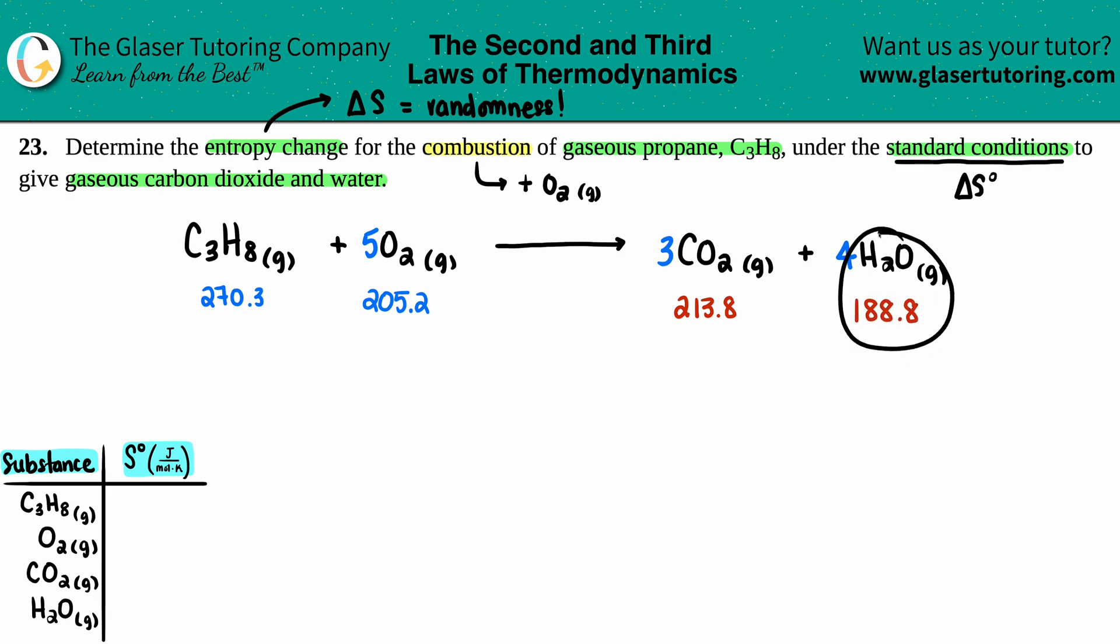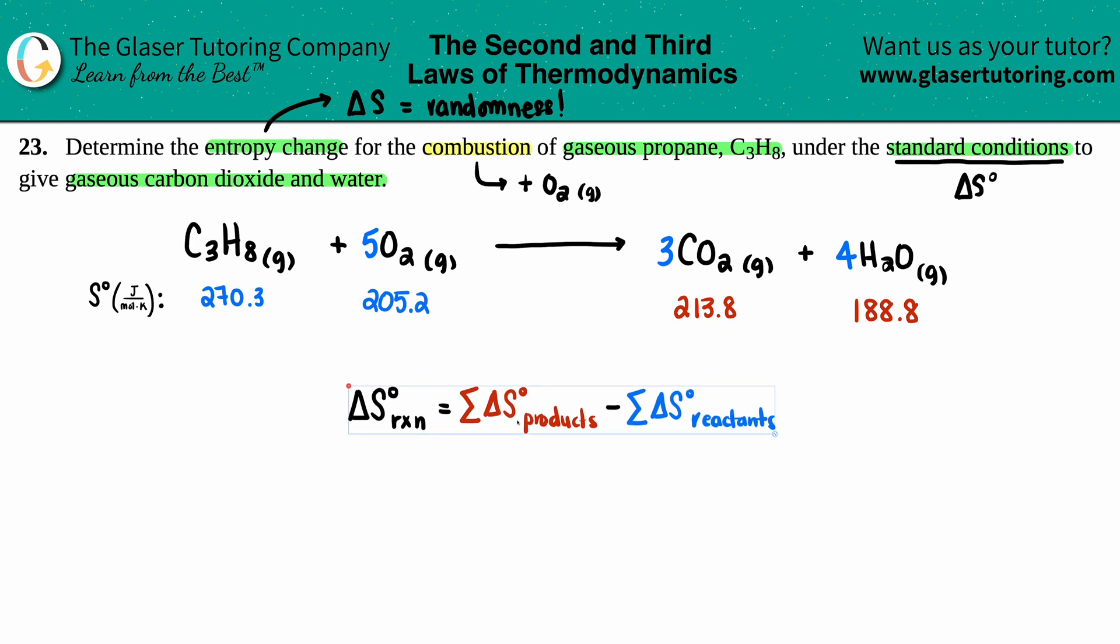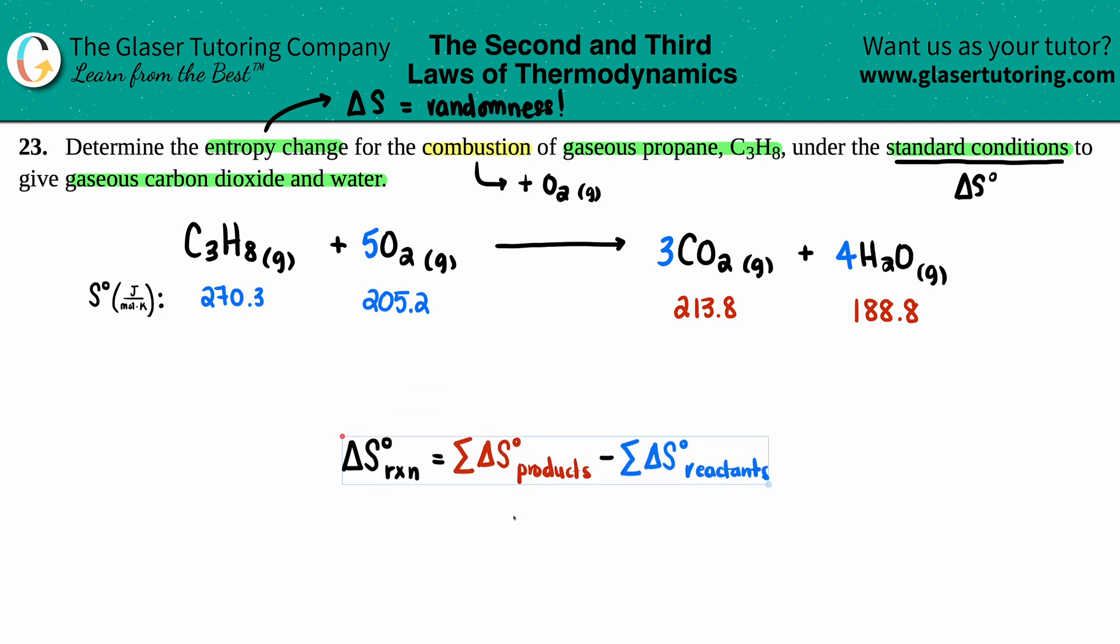Now let's finish this out. These were all of your S values. What are we going to do with these values? We have to put it into some type of formula. If we're solving for delta S for the whole entire reaction and we have all the S values, it's a pretty simple formula.